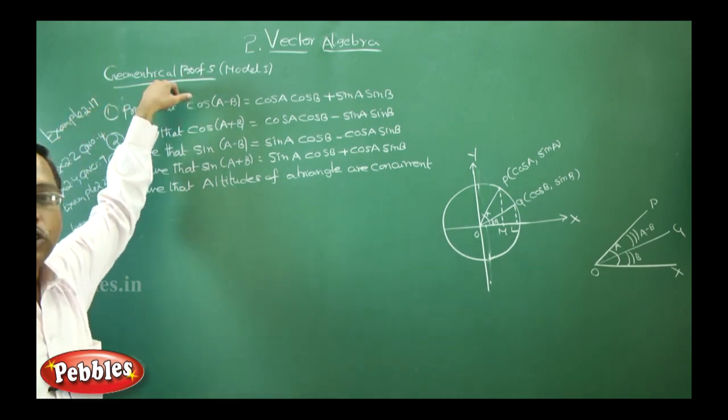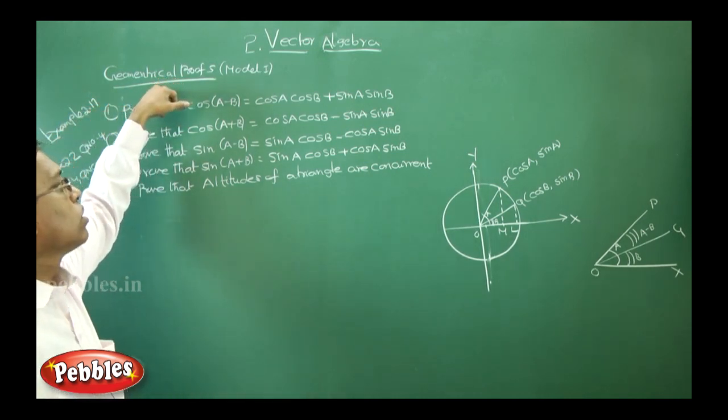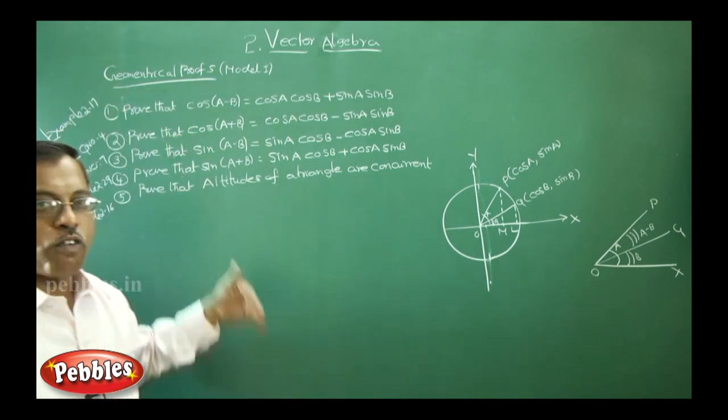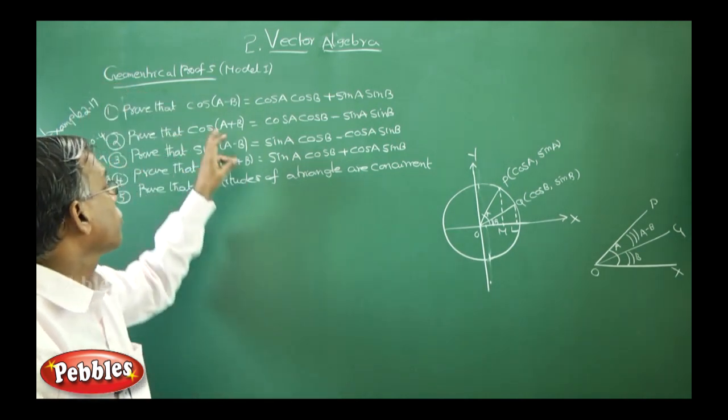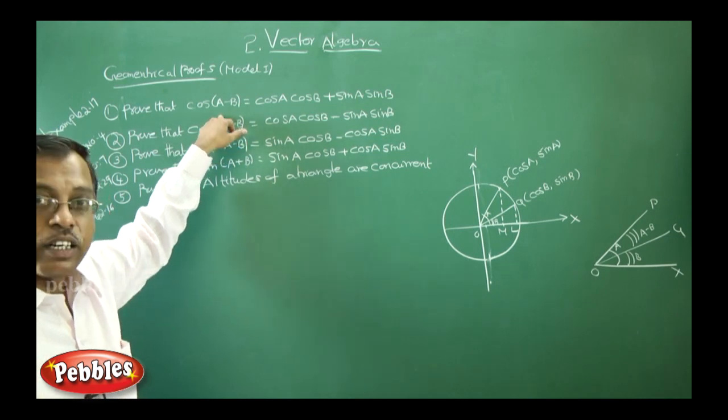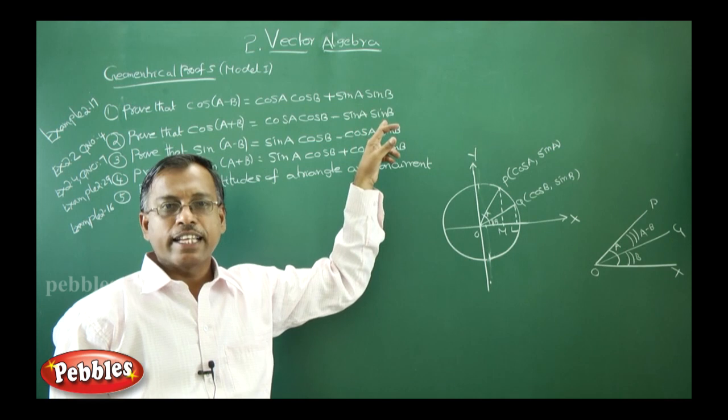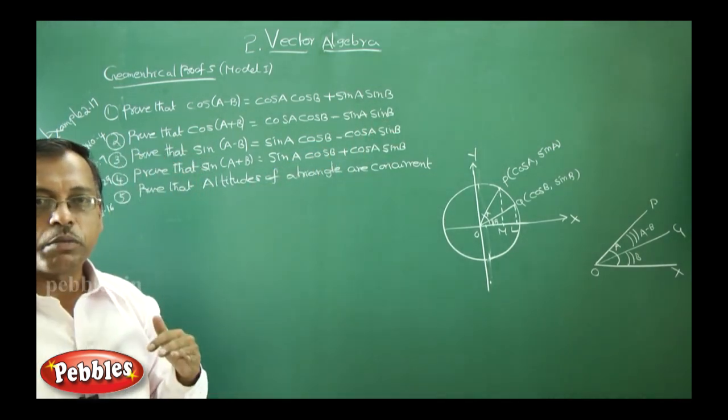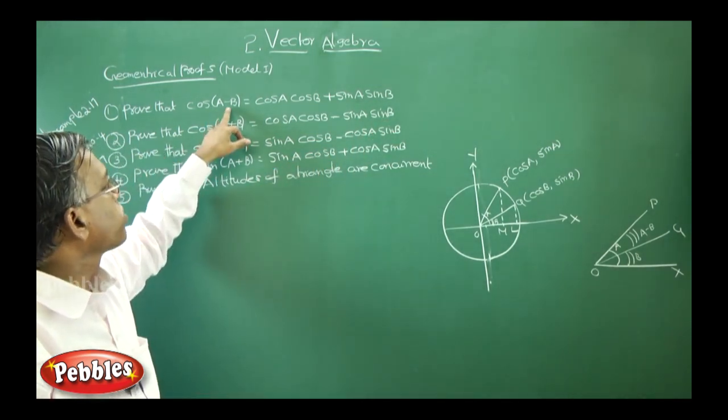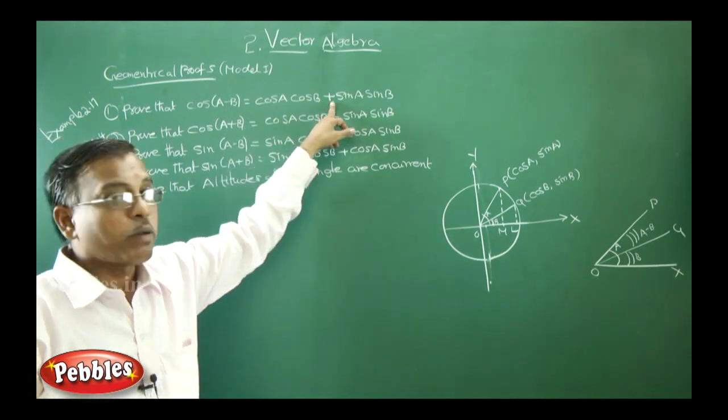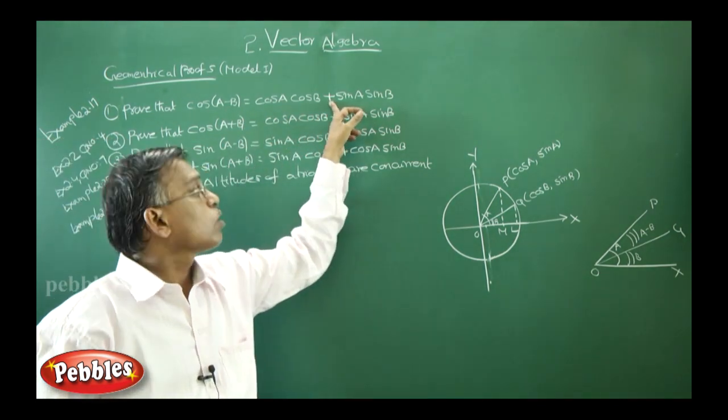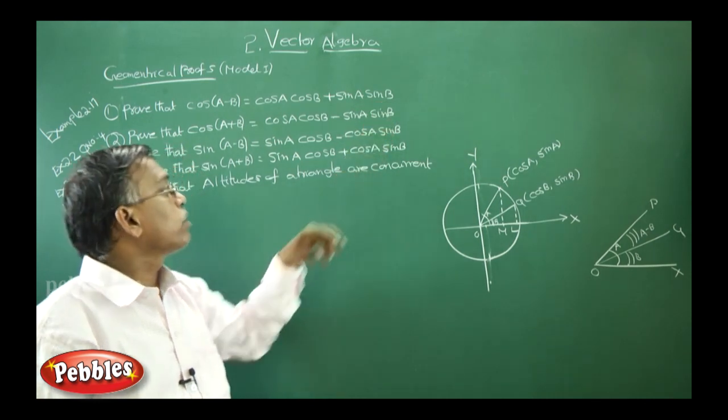First method is geometrical proofs. That means we have to prove some of the formulas used in trigonometry, like cos of A minus B. This one you already studied in plus 1. Cos A cos B plus sin A sin B. How can you remember this formula? If it is minus, in the middle plus sin you have to use. So, cos A cos B plus sin A sin B.